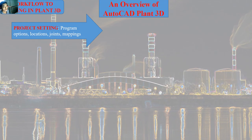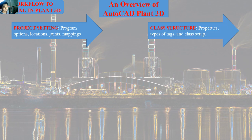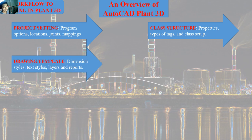In the project setting we will set the program options, choose the location to save our project, set up the joints for piping components, and do the mapping for connectors. In the class structure we will list the properties, set the type of tags, and do the class setup. In the drawing template we will set the dimension style, text style, layer, and report.